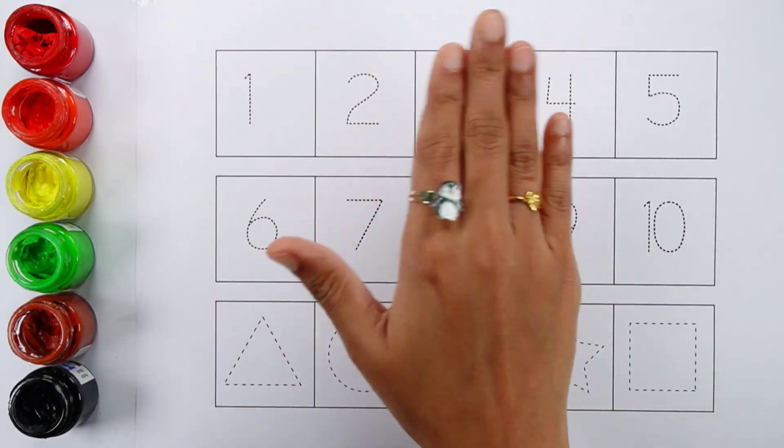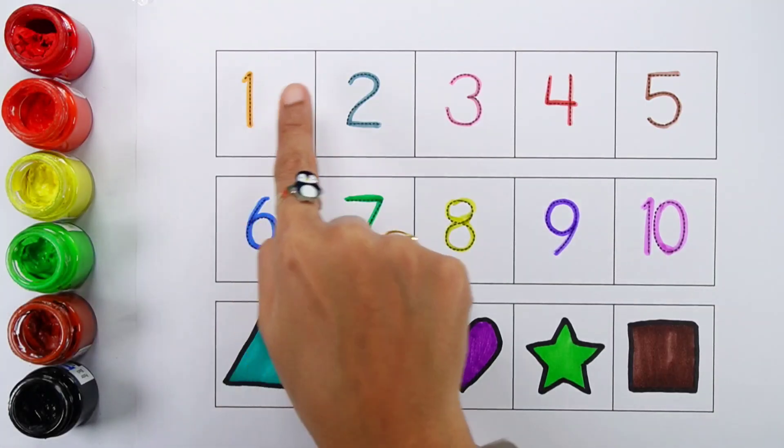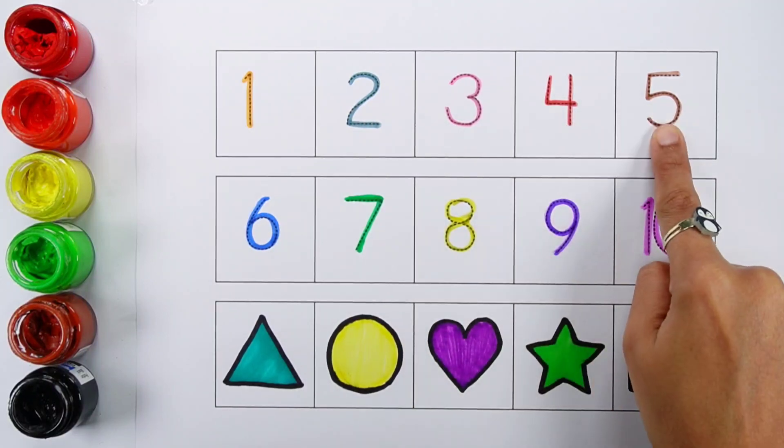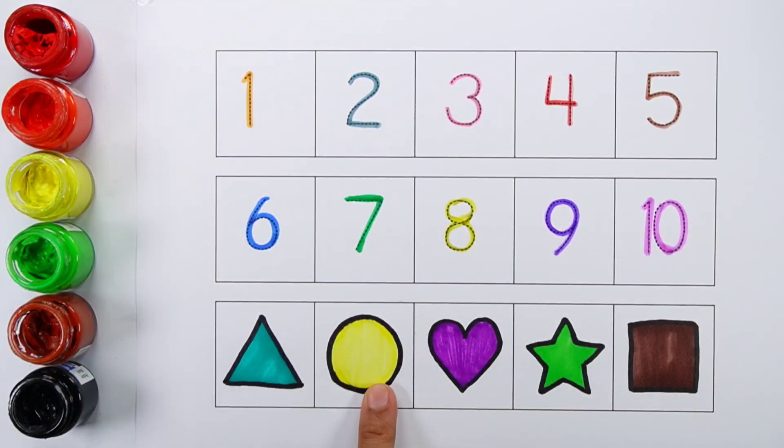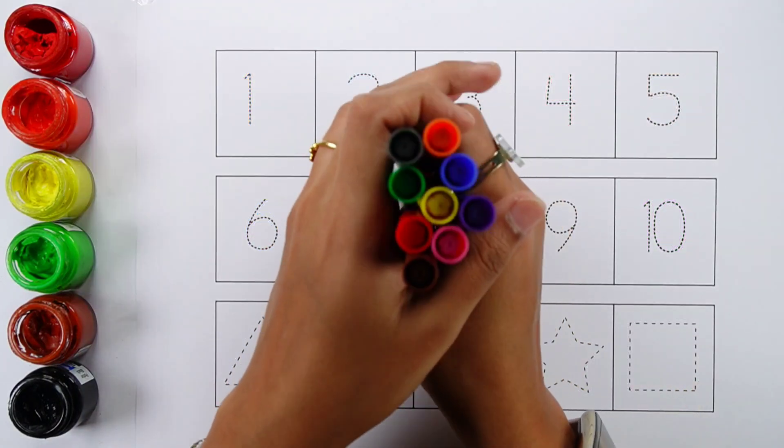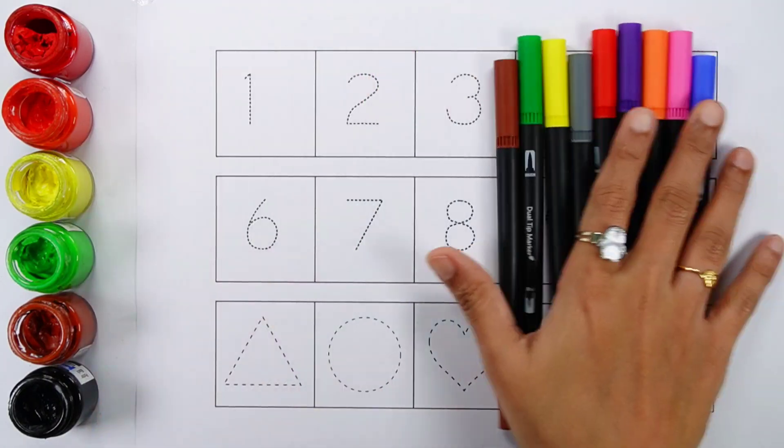Hello guys, one, two, three, four, five, six, seven, eight, nine, ten. Triangle, circle, heart, star, square. Let's learn some colors.